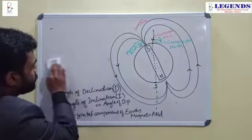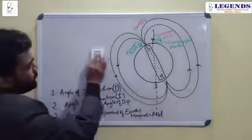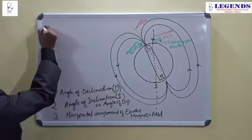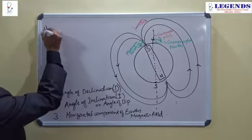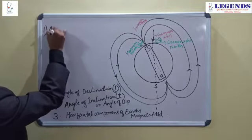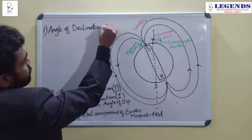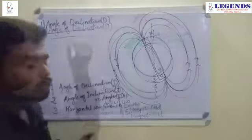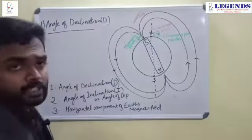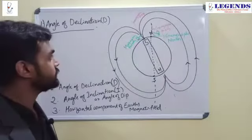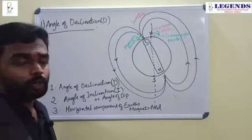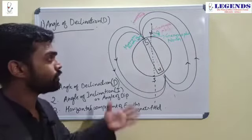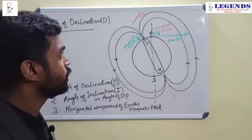So let's go in detail one by one. First one is angle of declination. Before coming to the concept of declination, I have to tell you what a magnetic meridian and what a geographic meridian is.